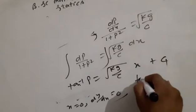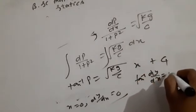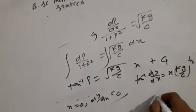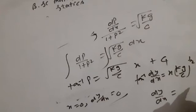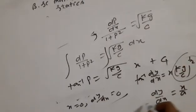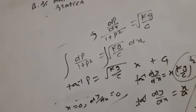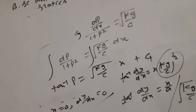This gives dy/dx. Taking tan inverse: tan inverse of dy/dx equals x times square root of kg/c. Setting a equals the inverse, dy/dx equals tan of x/a.